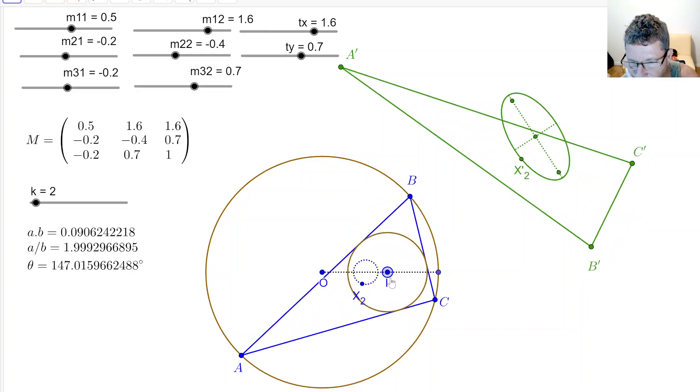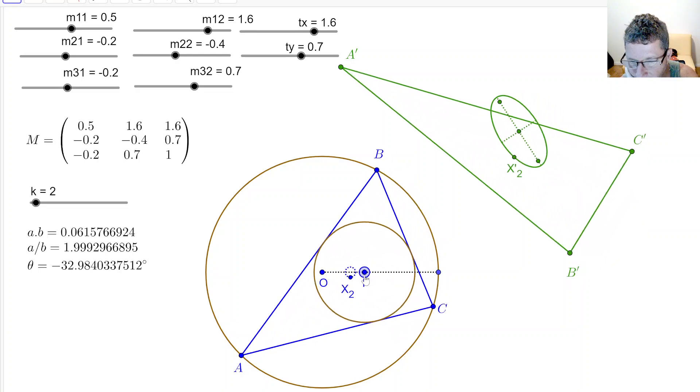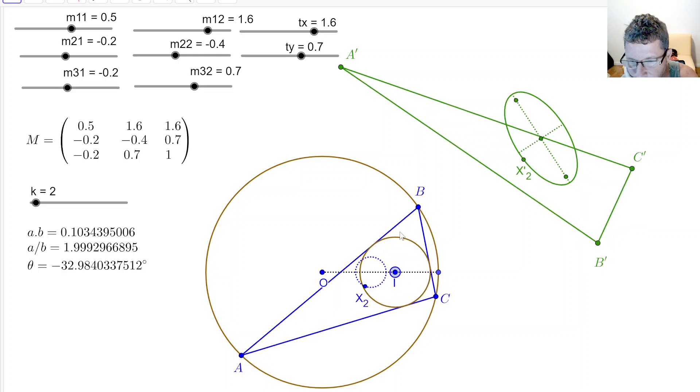As the in-center of ABC is moved around along this line, I'm adjusting the radius of the circle so that the porism is maintained.